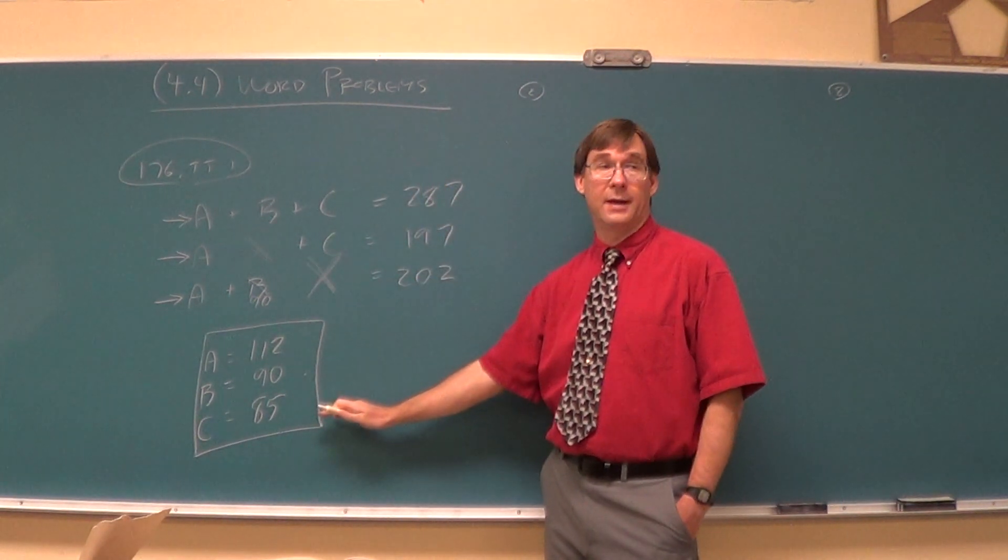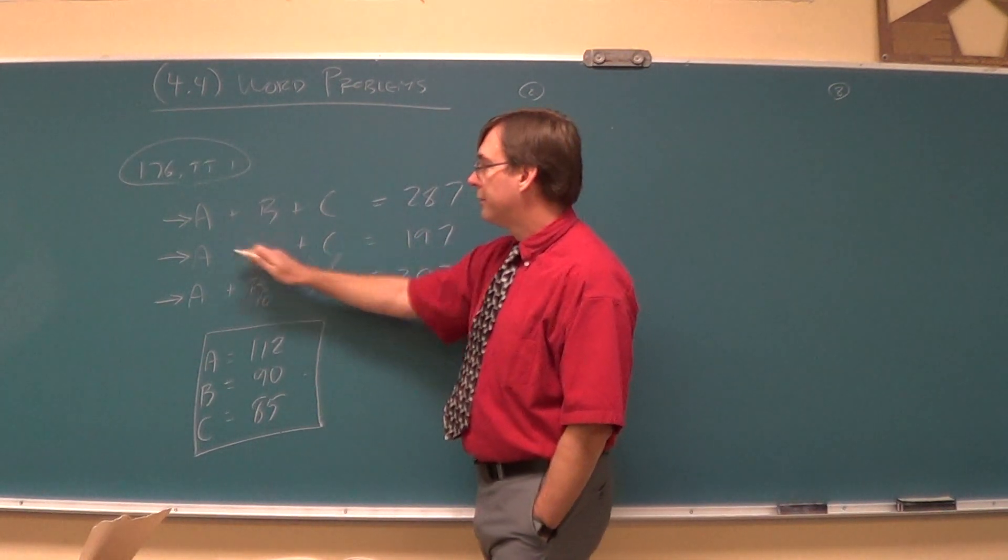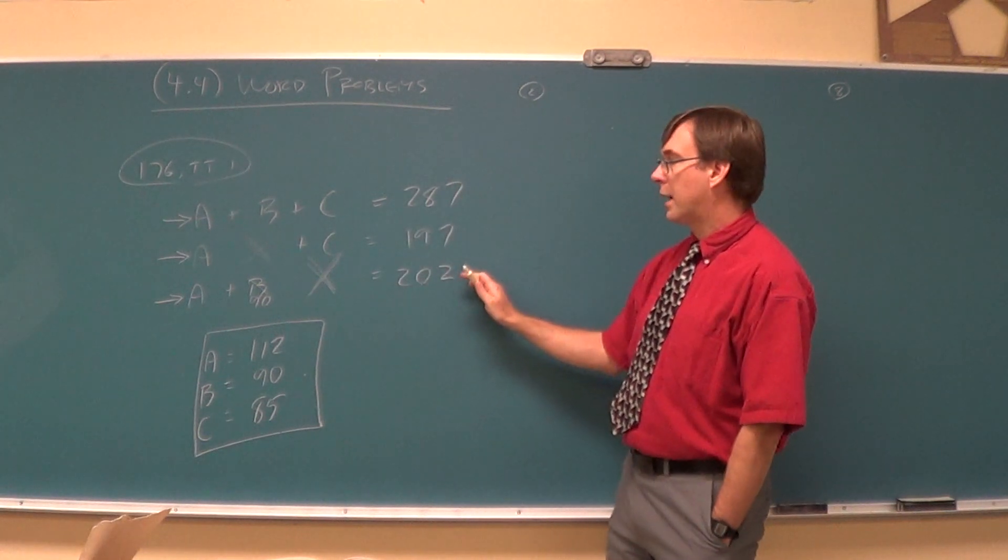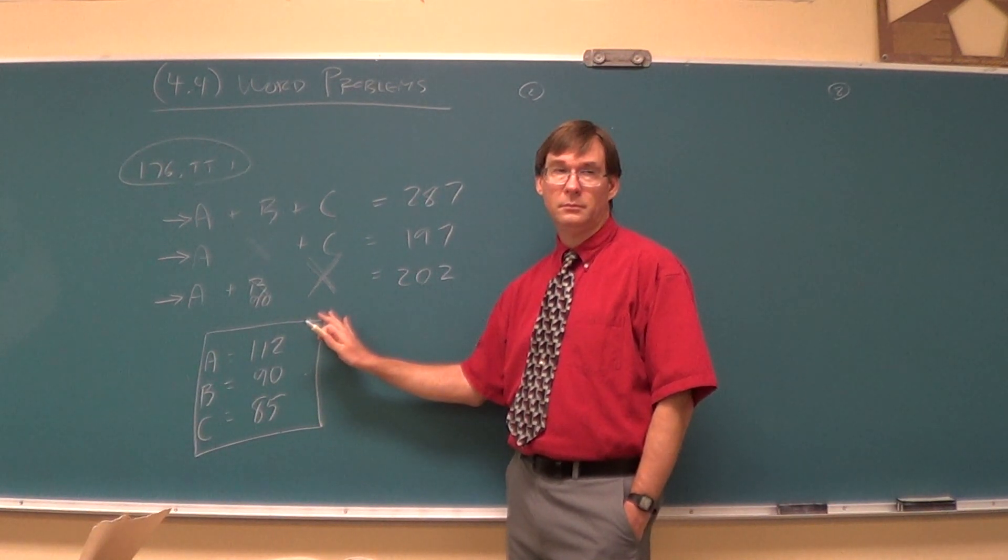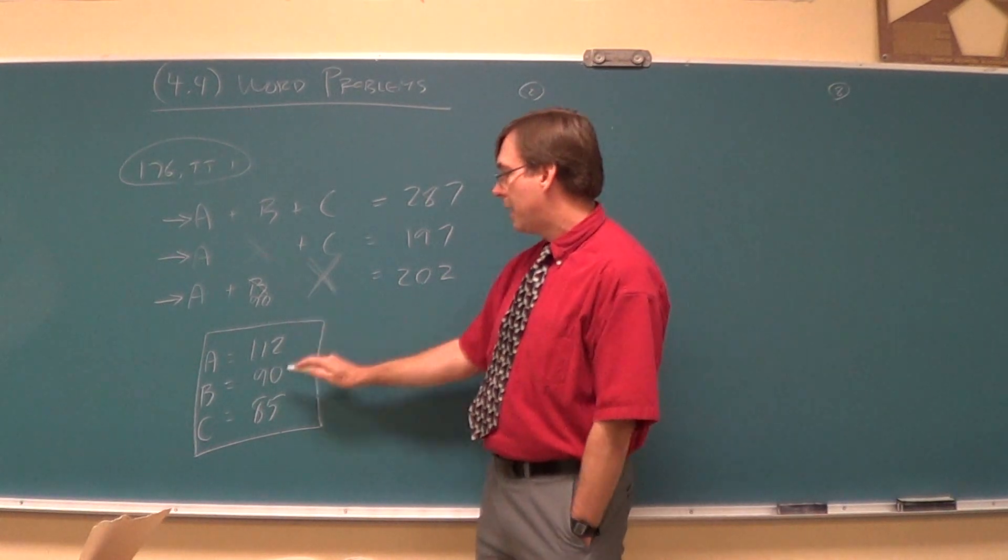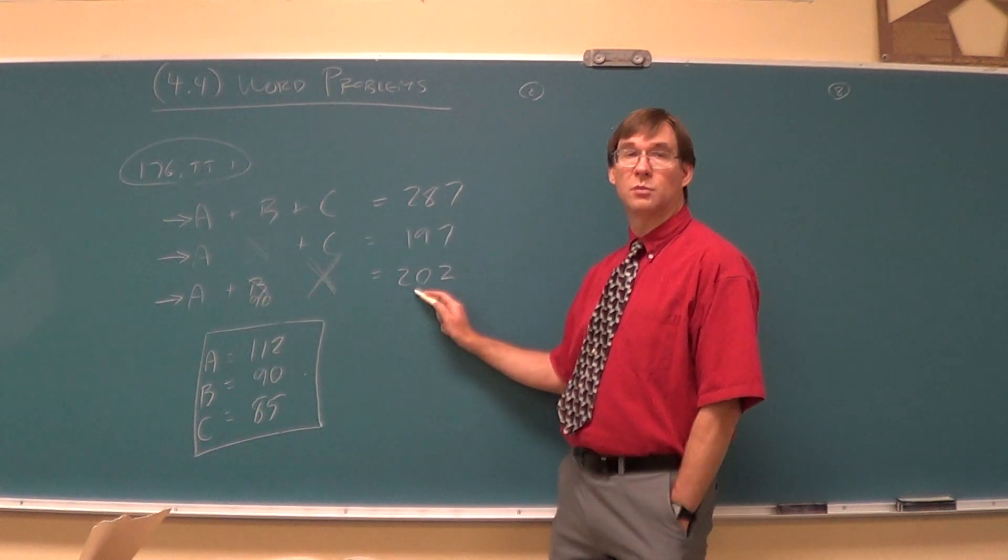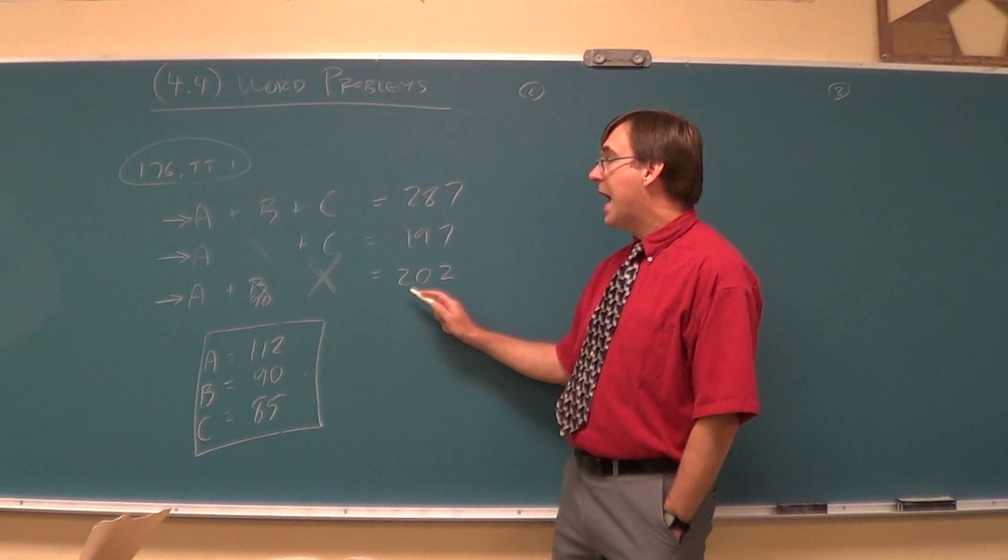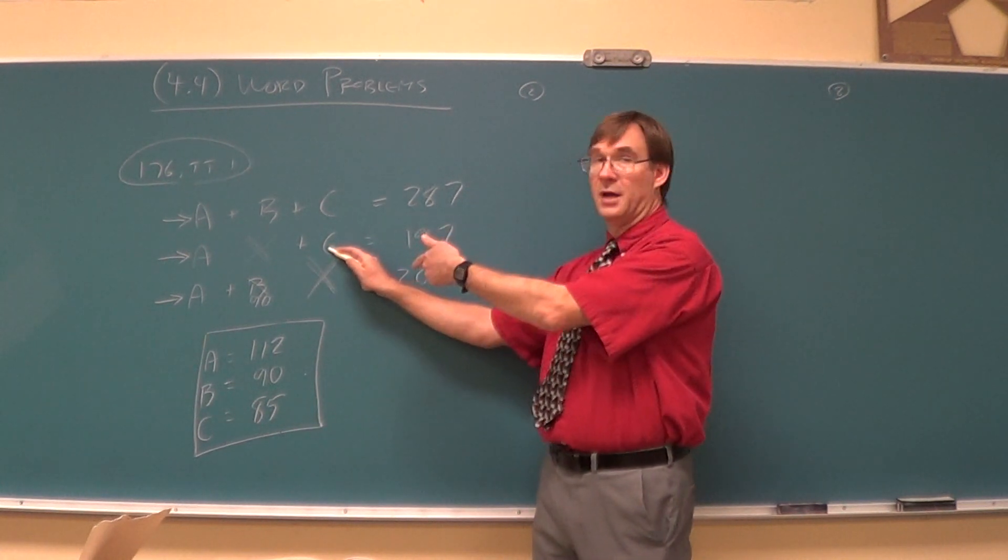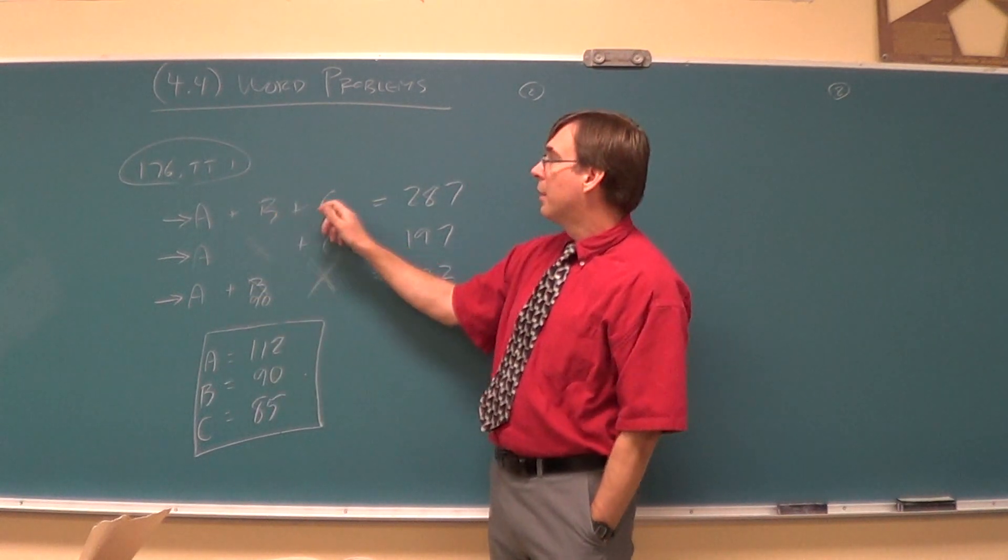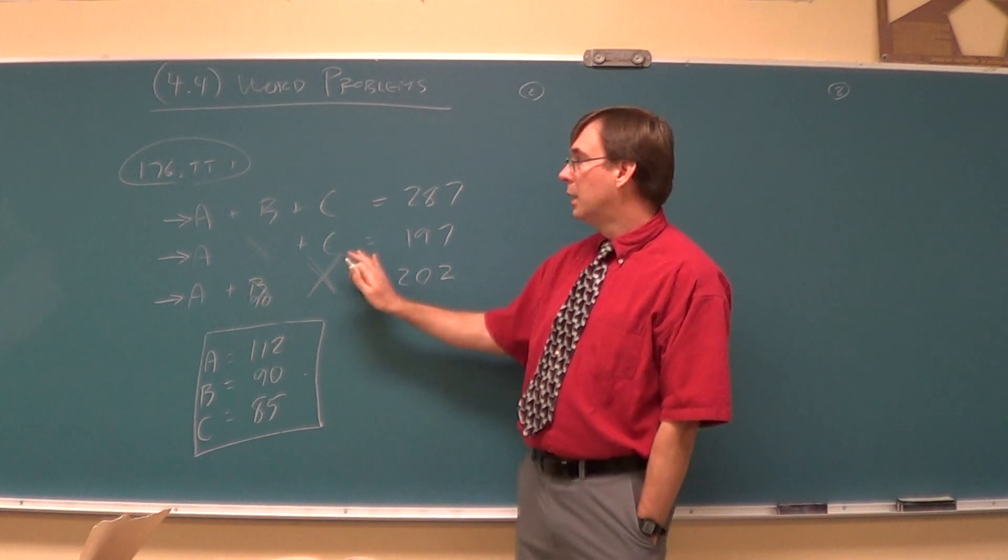There's a couple in the homework that are like that. They've got three things going, they shut one of them down, so you subtract. They shut another one down, so you re-subtract. And once you've got a couple of them, you can get the third. Anybody have questions about that game? Once you knew the B was 90, you could replace the B with a 90, and then just do an opposite and subtract the 90 to get 112. Is that okay?